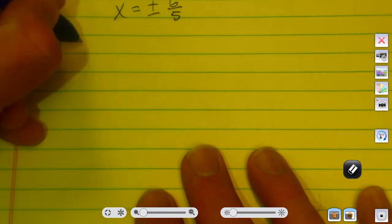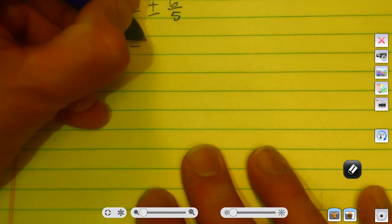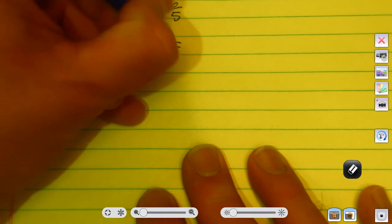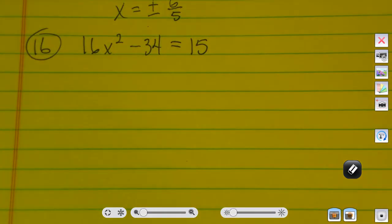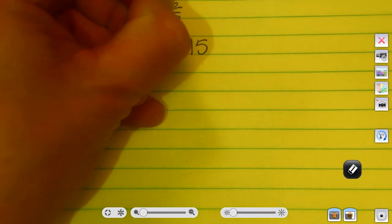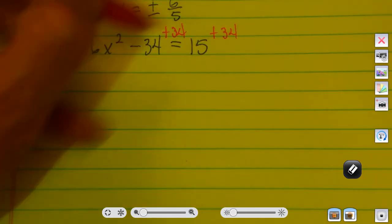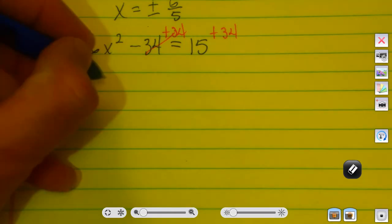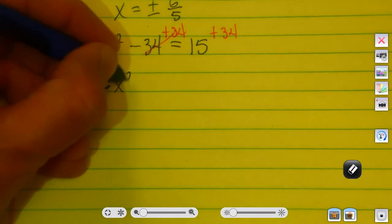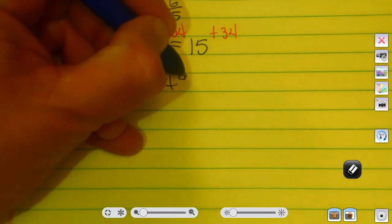Number 16 is 16x squared minus 34, and that equals 15. I'm going to add 34 to both sides to start out with. That's not a new step. We know to do that. I'll get 16x squared equals 15 plus 34, which is 49.